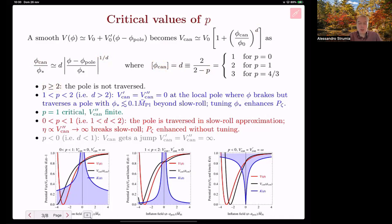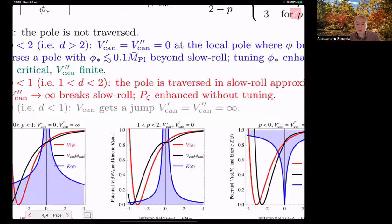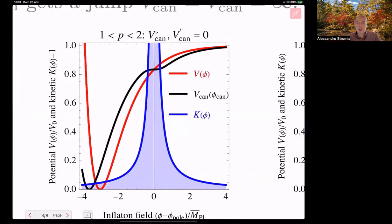If the power is below 1 and 2, meaning canonical dimension of the field bigger than 2, then both the first and second derivative vanish at the pole. The field breaks, but still manages to cross the pole, provided that the width is subplanckian and going beyond the slow roll approximation that breaks down. One can get a big enhancement of the power spectrum by tuning the width. An example of this case is here, where we can see that the canonical potential in black gets very flat around the pole.